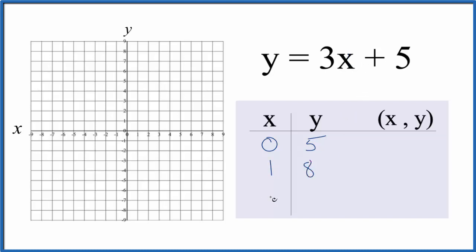And then if we put negative 1, 3 times negative 1, that's negative 3, plus 5, that'll give us 2. So these are the points that we'll graph for the equation y equals 3x plus 5.